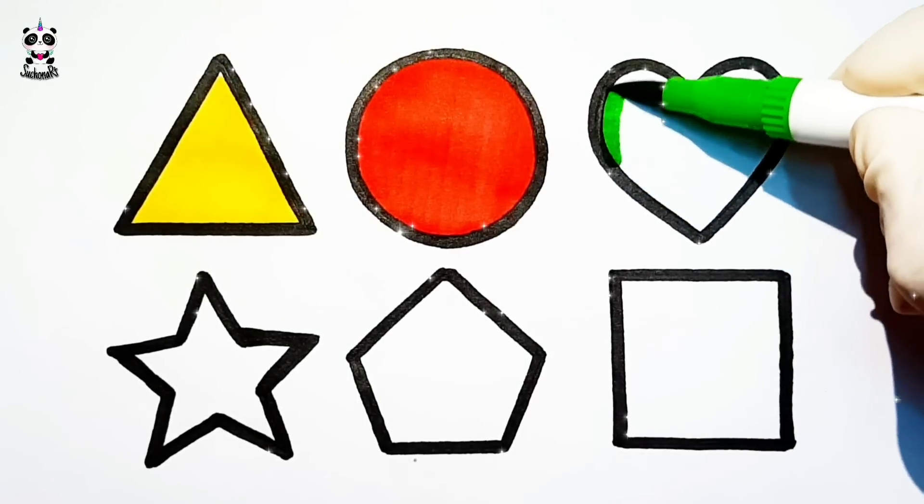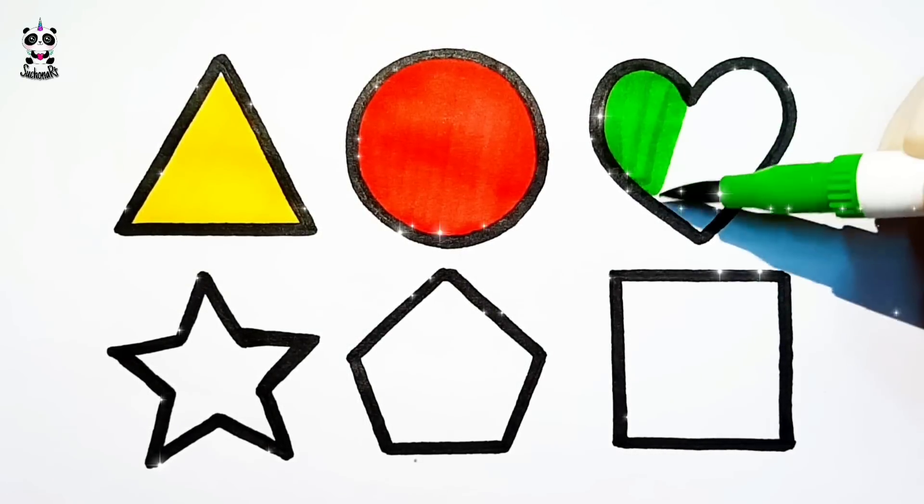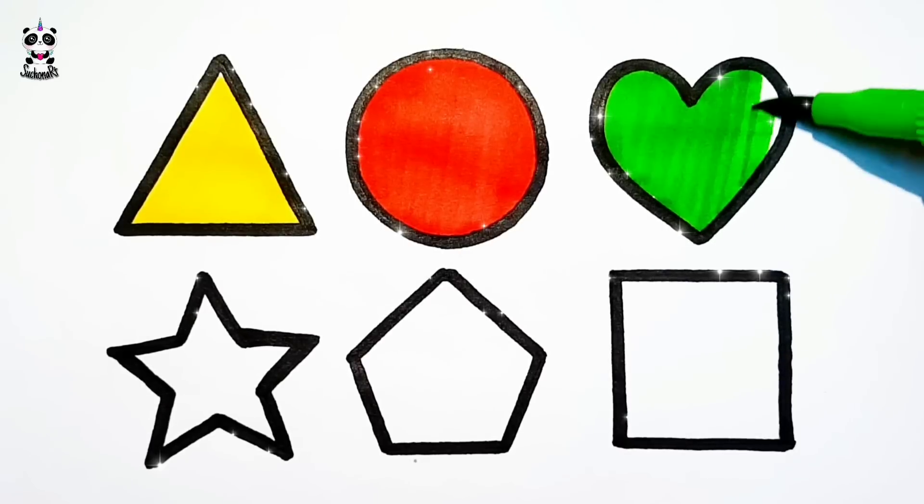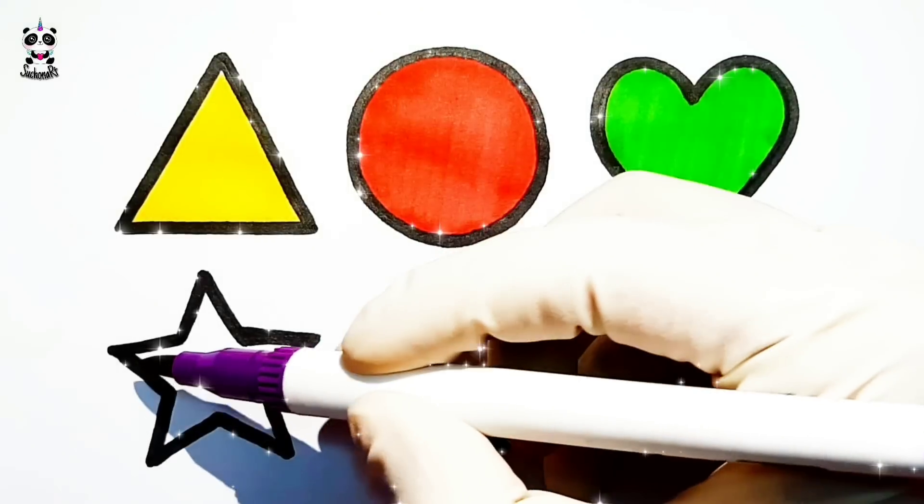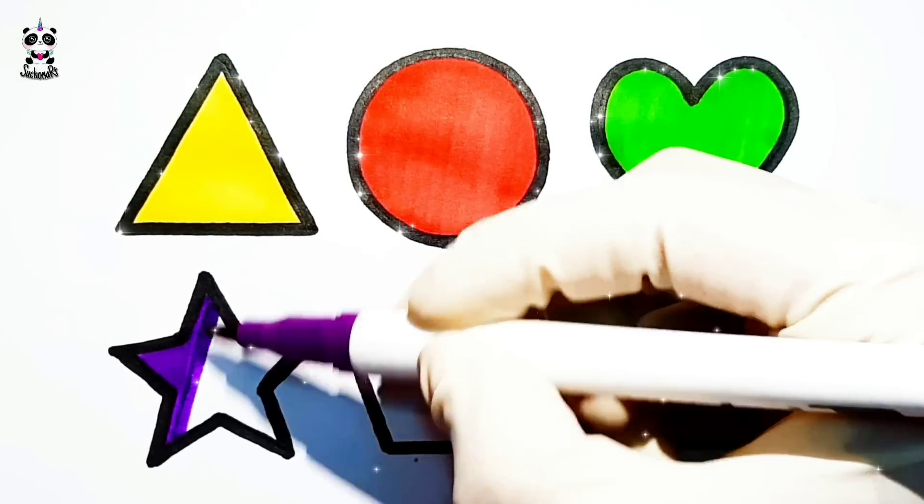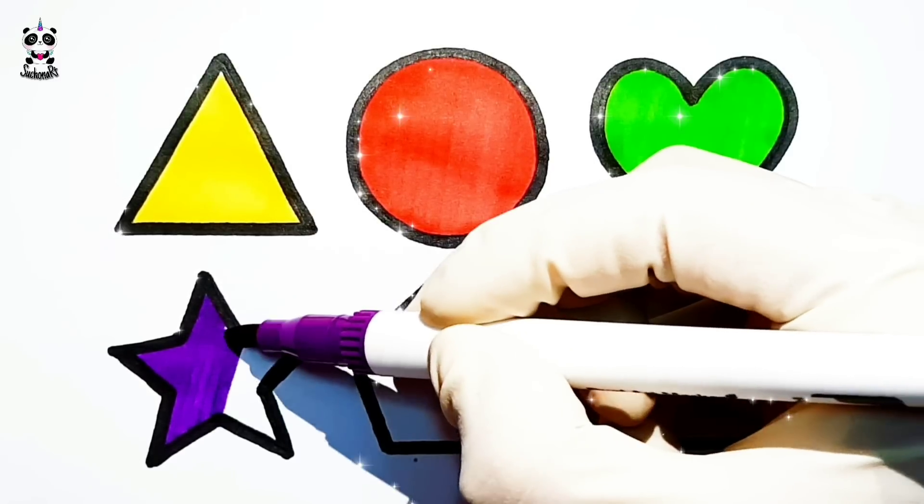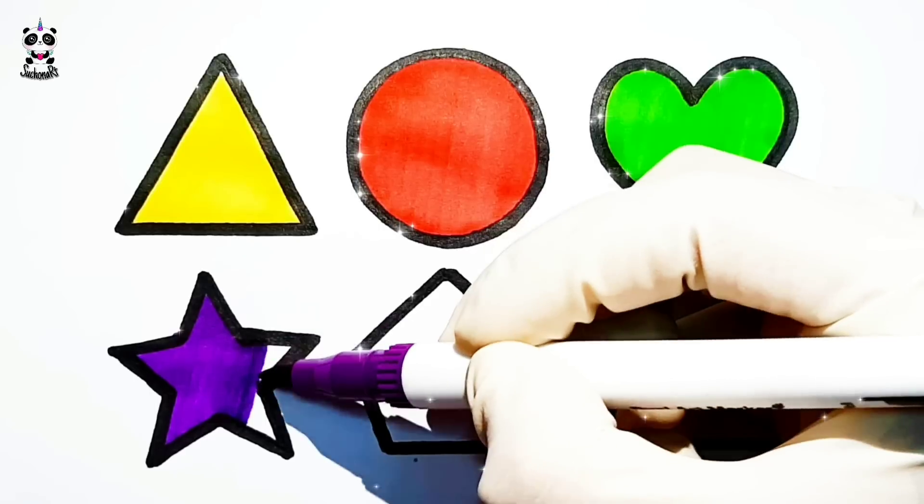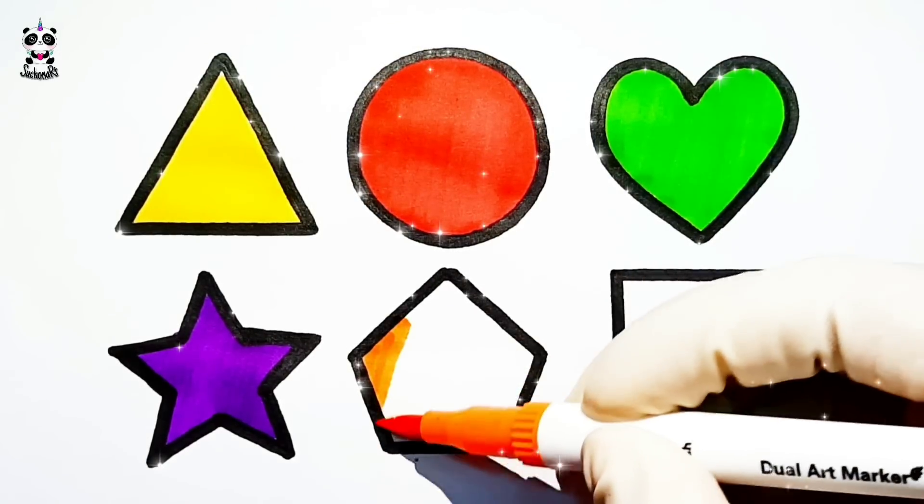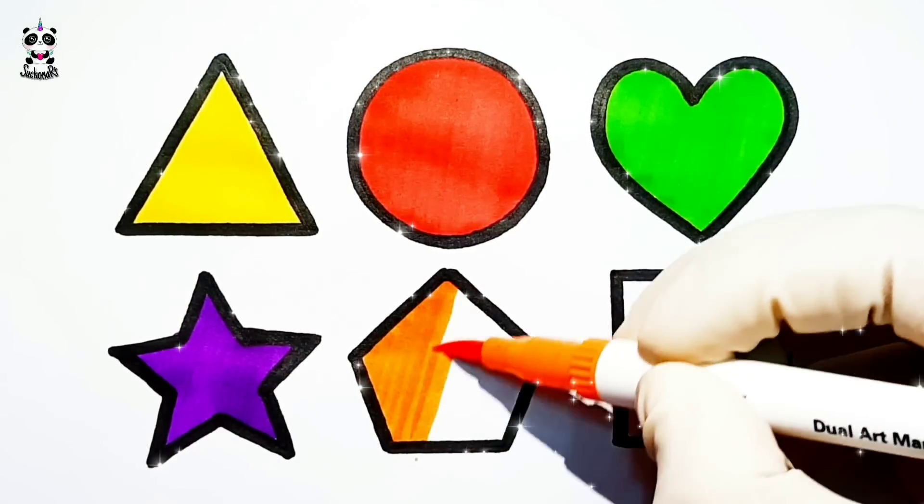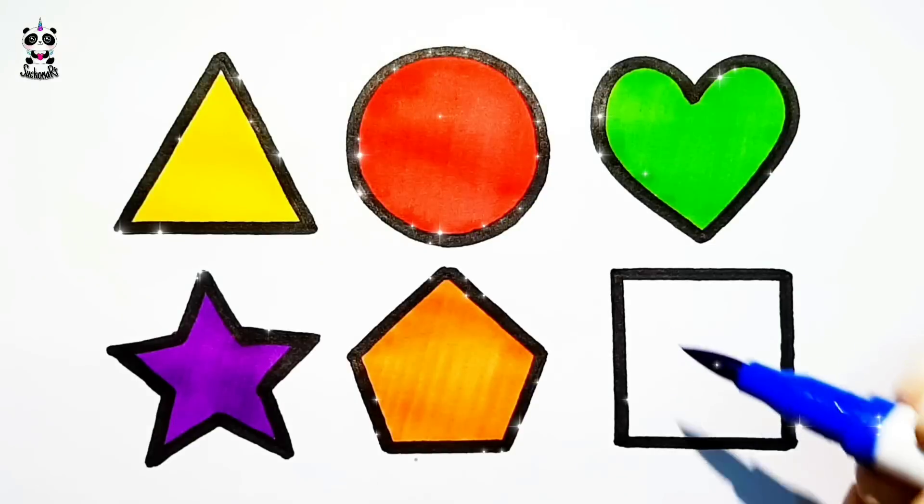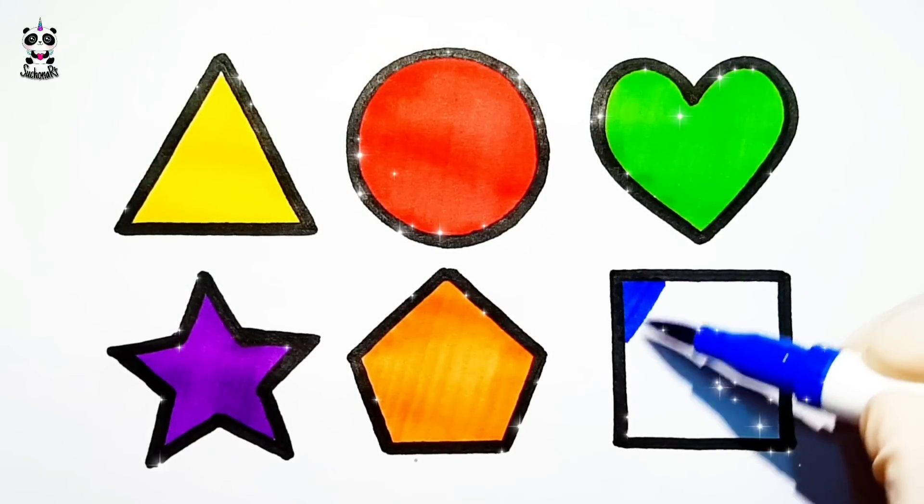Yellow, Green, Purple. A-B-C-D-E-F-G, H-I-J-K-L-M-N-O-P, Q-R-S-T-U-V, W-X-Y-and-Z. Now I know my ABCs, Blue, next time won't you sing with me?